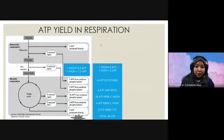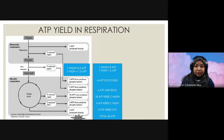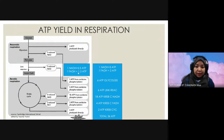Teacher would like to elaborate more about ATP yield in respiration because this part is quite tricky. From glycolysis, it will produce 2 ATP and 2 NAD+. Reduced NAD+ will become NADH. From the link reaction, it will produce 2 NAD+ reduced to become NADH. From here, reduced NADH will later yield 2.5 ATP each, and FADH2 yields 1.5 ATP each.